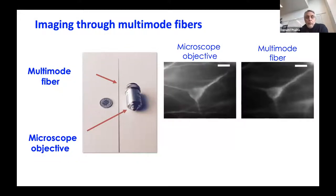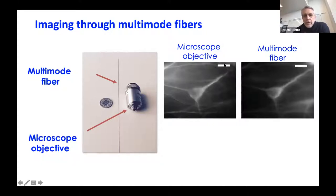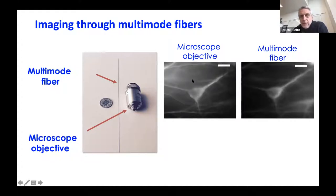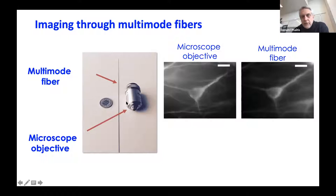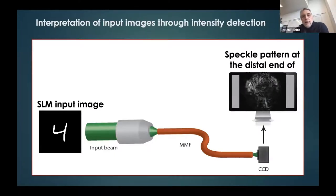The motivation is clear from comparing a multimode fiber — thin as a needle — with a microscope objective. Images of neurons obtained with the multimode fiber show approximately one-micron resolution, comparable to a normal objective. For endoscopic applications, nobody wants a large objective inserted into their body, but this thin fiber can be inserted like a needle to look at cells inside.